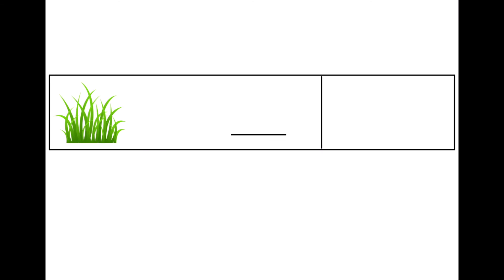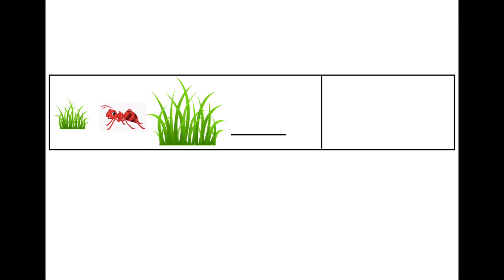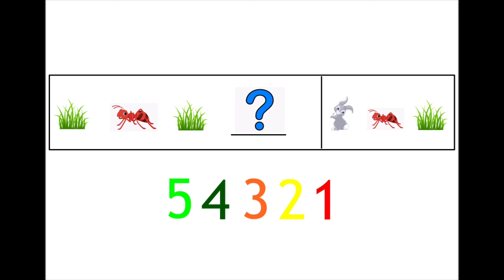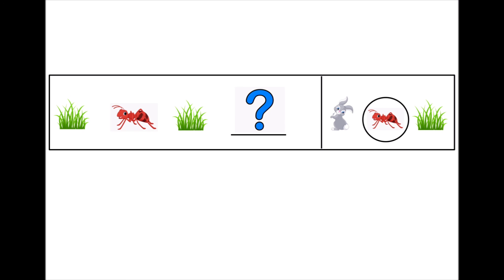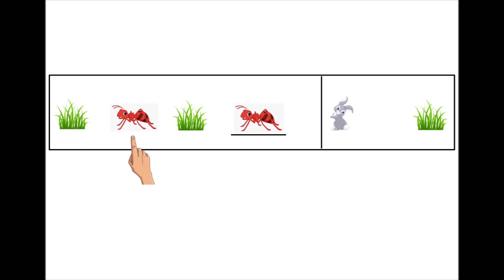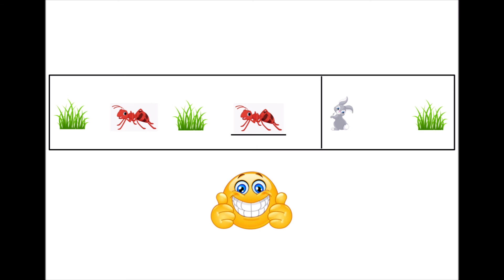We have the last one. The first picture is a grass, an ant, grass... what's next? Is it a bunny? An ant? Or a grass? I'll give you time to guess. Five, four, three, two, one. So what do you think? Very good — it's the ant! The sequence is: grass, ant, grass, and the ant. Well done!